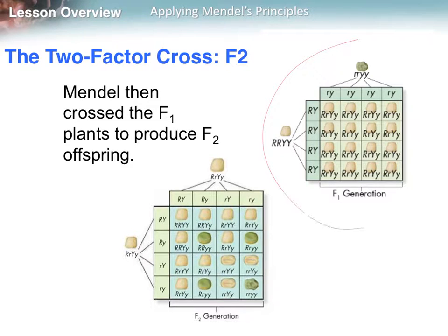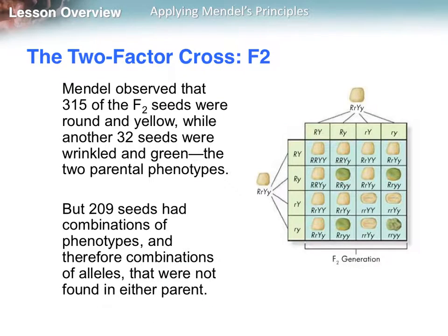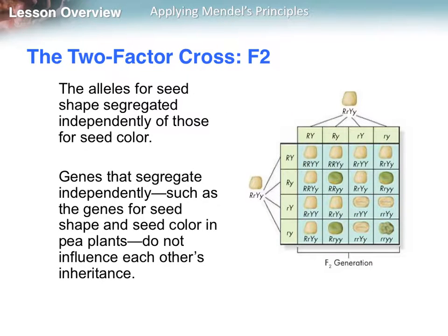Mendel then crossed the F1 generation to get the F2 generation. He had 315 seeds that were round and yellow, 32 seeds that were wrinkled and green, but 209 seeds had combinations of phenotypes not found in either parent. For example, some were wrinkled and yellow, even though neither parent was wrinkled and yellow at the same time. What Mendel discovered was that the alleles for seed shape segregated independently of those for seed color.